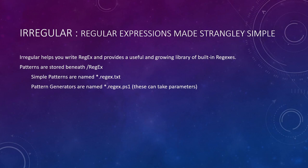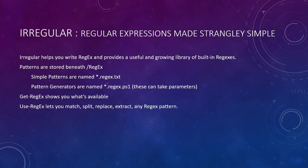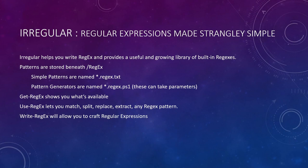There are also pattern generators, which are named star.regex.ps1. These can take parameters and are incredibly powerful, obviously built to match anything you'd like. You can use Get-Regex to see what's available and explore Irregular to see what works for you. You can use Use-Regex to match, split, replace, extract, and any number of other things with any regex pattern or saved pattern. And Write-Regex will allow you to craft regular expressions in a nice fluent pipeline where you pipe Write-Regex to Write-Regex to Write-Regex — it's a pretty potent toolkit.